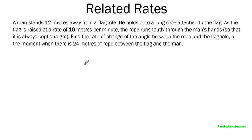So a man stands 12 meters away from a flagpole. He holds onto a rope attached to the flag. As the flag is raised at a rate of 10 meters per minute, so that's an important thing, the rope runs tautly, I guess that means sort of tight, through the man's hand so that it is always kept straight.